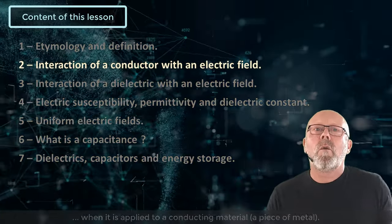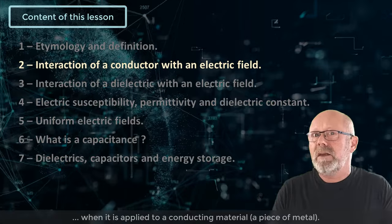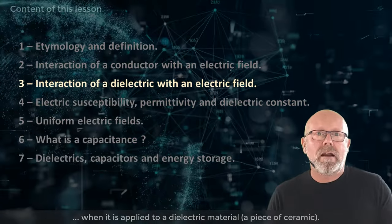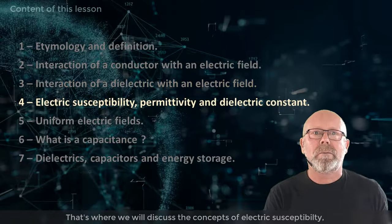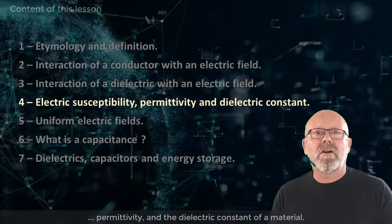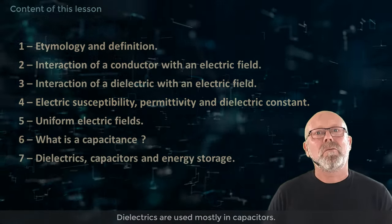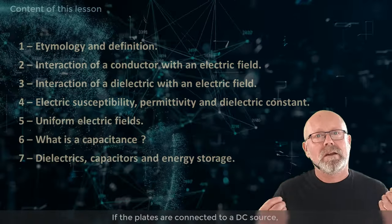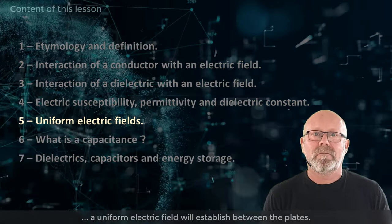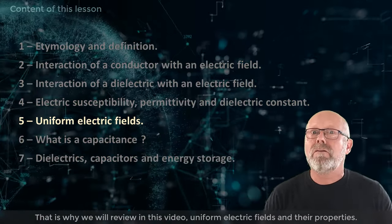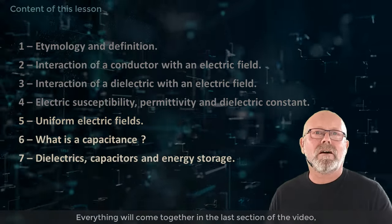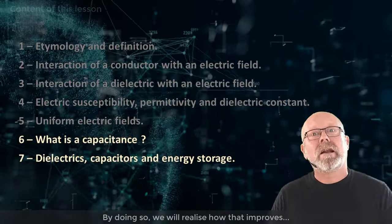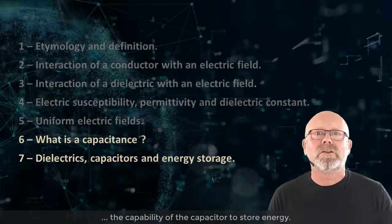First, we will look at what happens to an electric field when it is applied to a conducting material, like a piece of metal. That's where we will discuss the concept of electric susceptibility, permittivity, and the dielectric constant of a material. Dielectrics are used mostly in capacitors. A capacitor is made of two parallel conducting plates. If the plates are connected to a DC source, a uniform electric field will establish between the plates. That is why we will also review uniform electric fields and their properties. Everything will come together in the last section of the video, where we will place a dielectric material between the two conducting plates of a capacitor, and realize how that improves the capability of the capacitor to store energy.